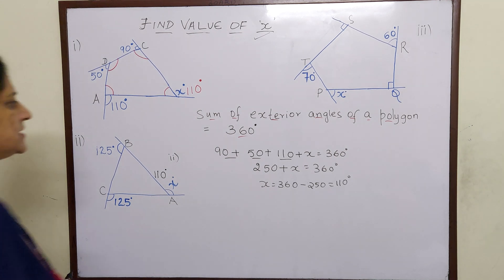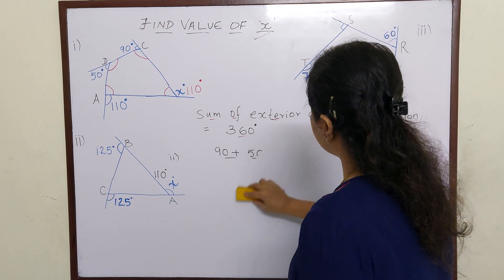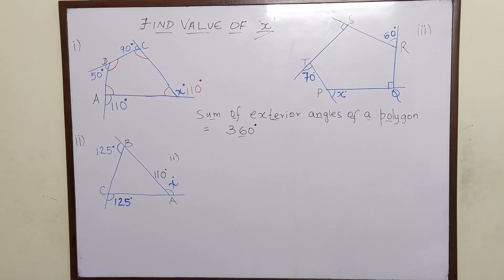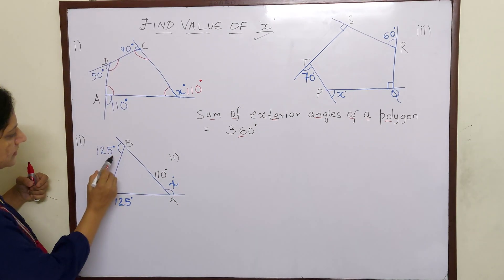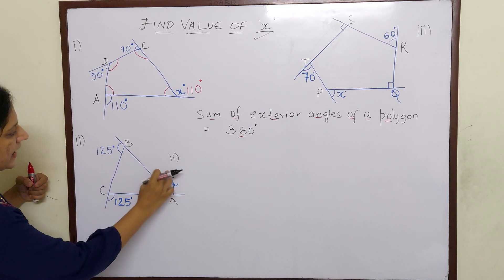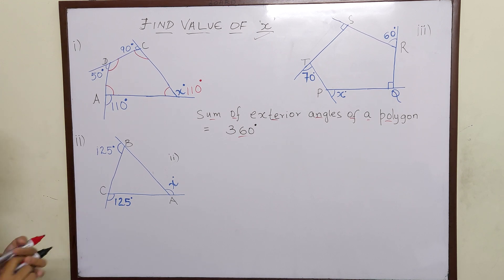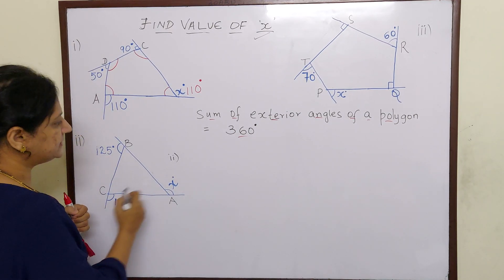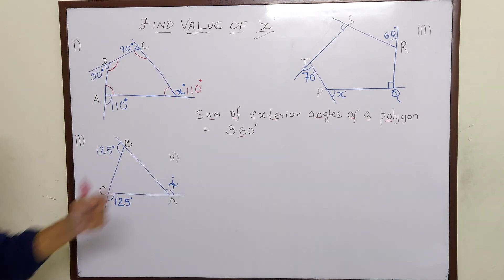Now this is in the shape of a triangle. There are 3 lines and there are 3 exterior angles formed. Angle A is x, angle B is 125 and angle C is 125. So if you add these exterior angles, they should work out to 360.